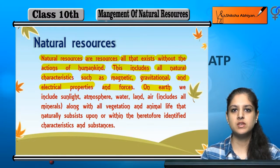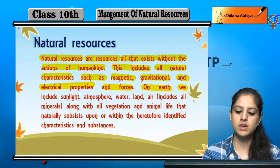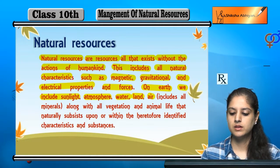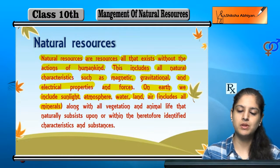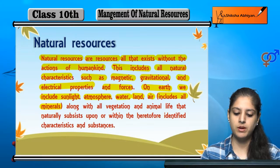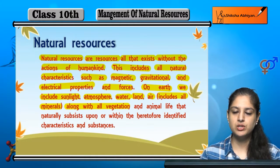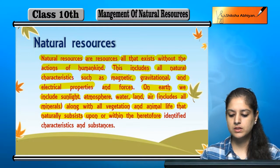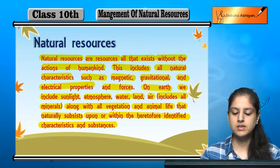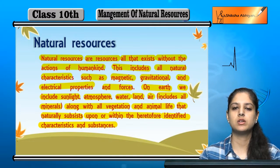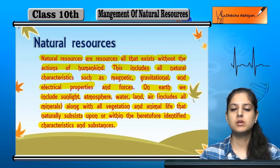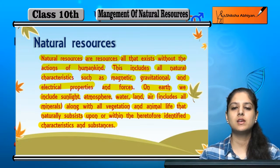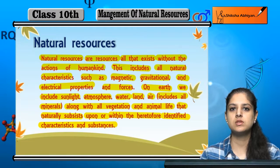Earth pe ye sab chizai contribute kerti hai natural resources banne mein: sunlight, atmosphere, water, land, air. In sab mein sare minerals bhi included hote hai — jitne bhi minerals earth crust mein available hai. Aur sari vegetation, including plant life and animal life that naturally subsist upon or within the identified characteristics and substance. Ye sab cheez — sunlight, water, land, air, animals, even human beings, vegetation, plants — jho naturally created hai aur naturally exist ho rye hai, unko hum natural resources bolti hai.